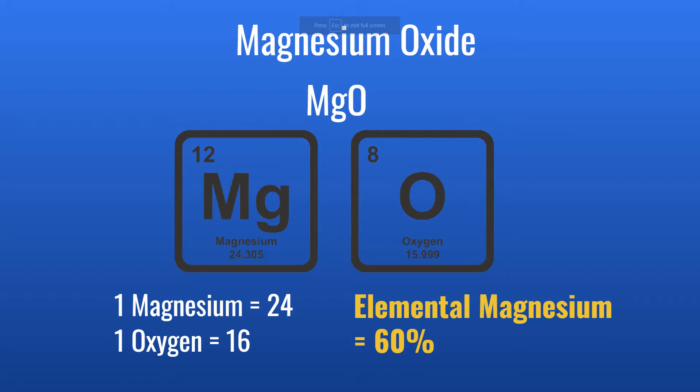A very simple compound that is the most common magnesium supplement — though certainly not the best form, generally speaking — is magnesium oxide. The chemical formula is MgO: one magnesium atom and one oxygen atom. Going back to the periodic table, one magnesium weighs 24 and one oxygen is 16, giving a total of 40. So 24 out of 40 is magnesium, meaning the elemental magnesium is 60 percent.